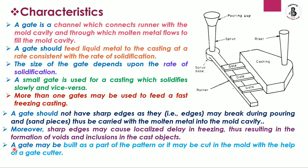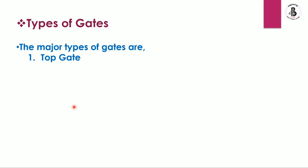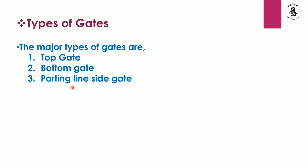A gate may be built as part of the pattern, or it may be cut into the mold with the help of a gate cutter. Now we will discuss the types of gates used in a casting process: first, the top gate system; second, the bottom gate; and third, the parting line side gate system.